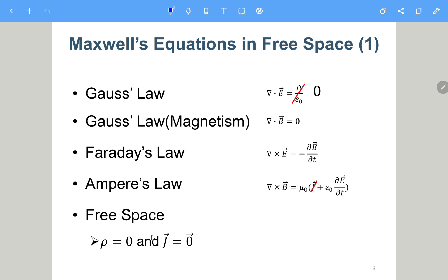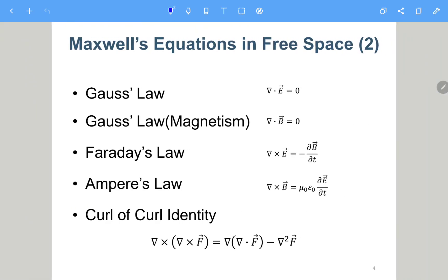Considering the free space condition, we have no charges and no current density. So we set ρ = 0 and J = 0. The right-hand side of the Gauss law terms becomes zero, and for Ampere's law with J = 0, we only keep the time derivative term. So the Maxwell equations in differential form in free space simplify accordingly.